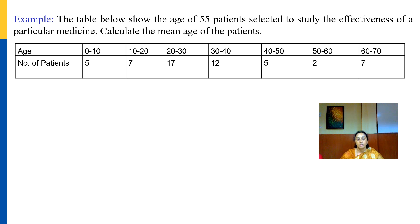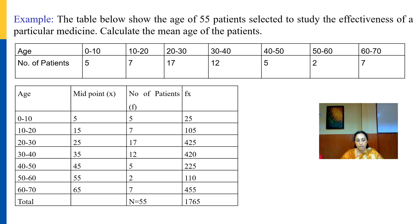Let us take another example. We have the ages of 55 patients and want to calculate the mean age to study the effectiveness of a particular medicine. There are 5 patients aged 0 to under 10 years, 17 patients aged 20 to under 30 years, and so on. We need to construct a table with columns for age class, number of patients (frequency), and mid-value of each class.